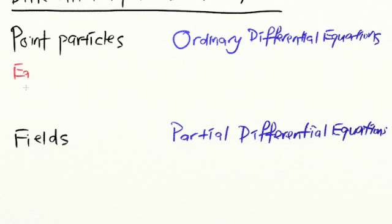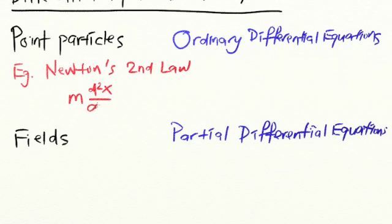An example of an ordinary differential equation that we would encounter when dealing with point particles would be Newton's second law. This is written in the form of mass times the acceleration, which we can write as d²x/dt², where x is the displacement and t is the time. And this mass times acceleration must be equal to the force acting on the particle, which is given in terms of the position as well as the time.